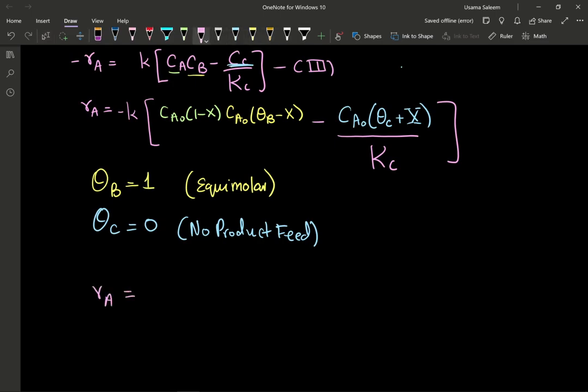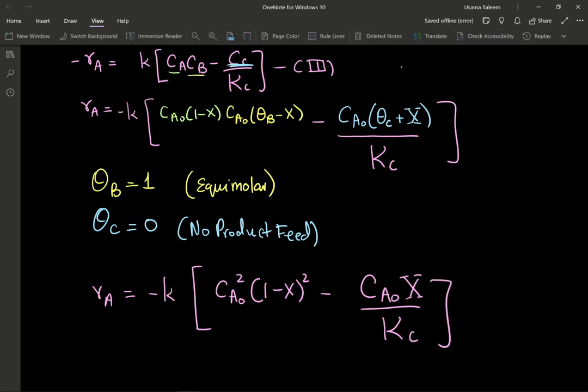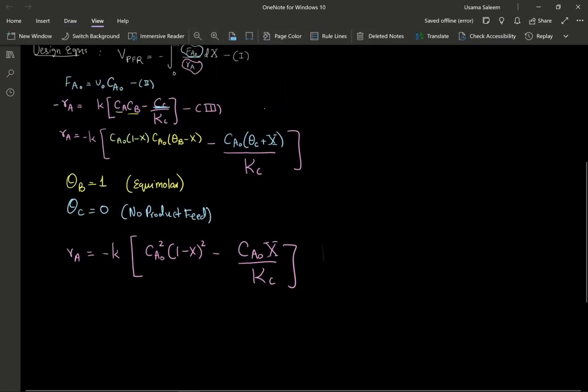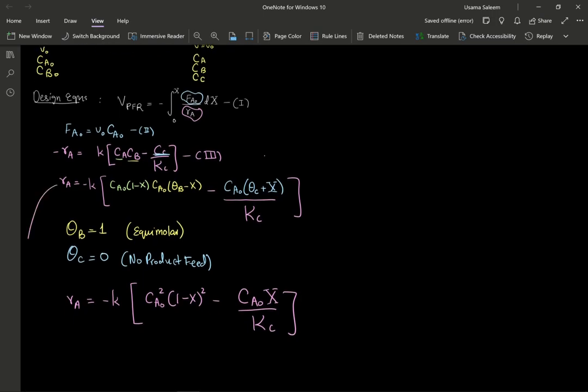Okay, please refer to the problem statement, no product in feed good. And once we have that, once you have that out of the way, your rate expression becomes, your final rate expression is going to look something like this. So you have your rate constant, you have C_A0 squared times (1-X)^2 minus C_A0(X) divided by K_C. Okay, and this right here, let's zoom out a little.